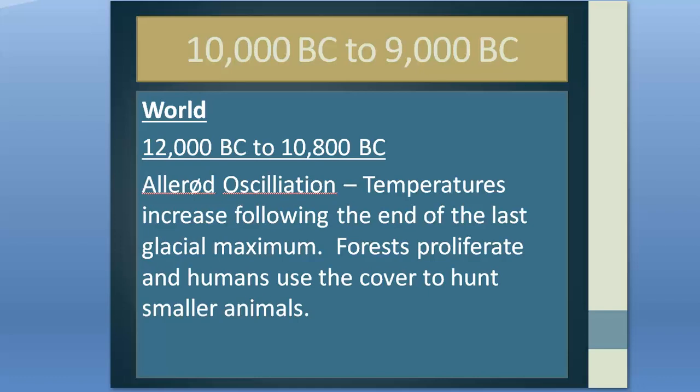In the last episode we covered some of the cultures that had evolved during this warm period in Europe, such as the Azilian — a late Magdalenian culture in northern Spain and southern France — the Federmesser culture stretching from northern France to Poland, and the Creswellian culture in Britain. Now you'd think we had seen the back of the ice age — and you would be wrong.